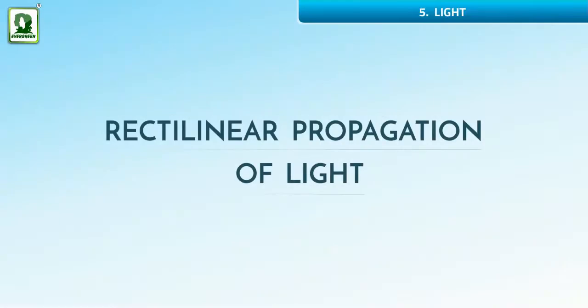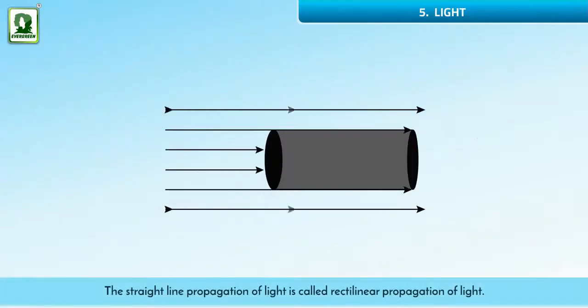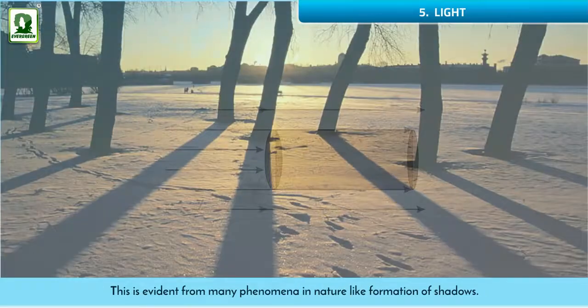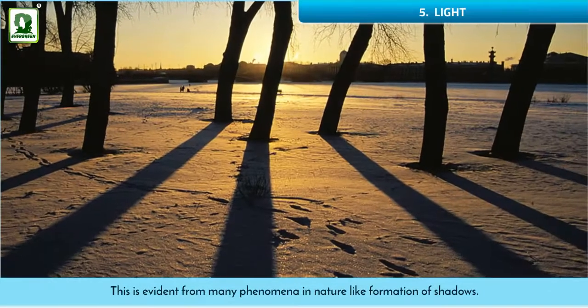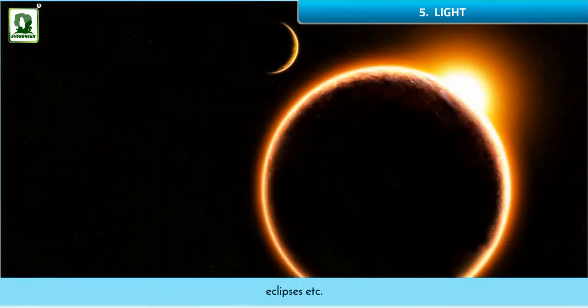Rectilinear Propagation of Light. The straight line propagation of light is called rectilinear propagation of light. This is evident from many phenomena in nature, like formation of shadows, eclipses, etc.